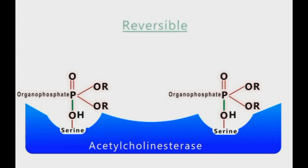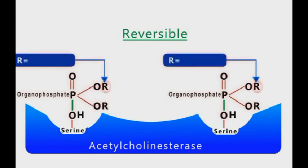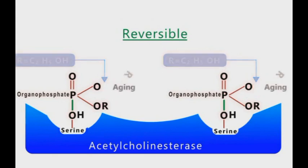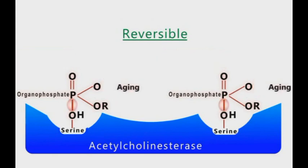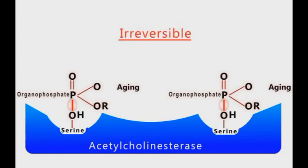At the beginning, the binding of organophosphates to acetylcholinesterase is reversible. However, with time, the methylene groups of organophosphates are spontaneously released in a process called aging. If aging has happened, the binding of organophosphates to acetylcholinesterase enzymes becomes irreversible.